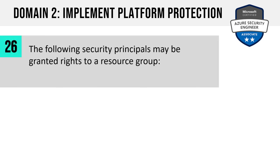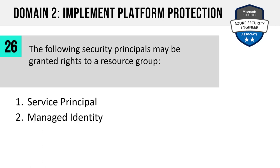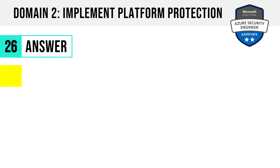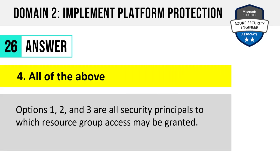Number 26. The following security principals may be granted rights to a resource group: service principal, managed identity, Azure AD user, or all of the above? The answer is four: all of the above. All three are security principals, and we can grant resource group access to any of them.